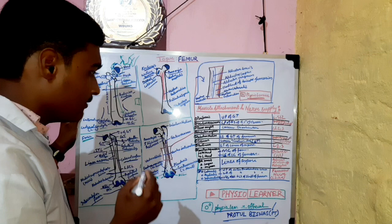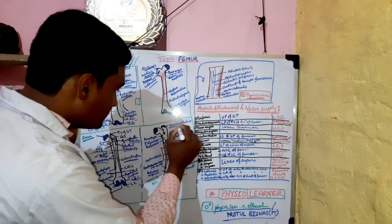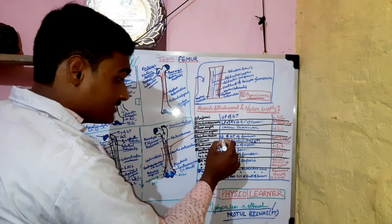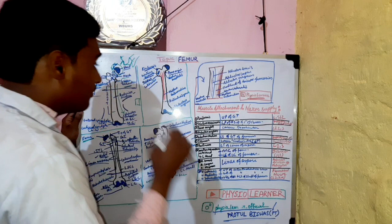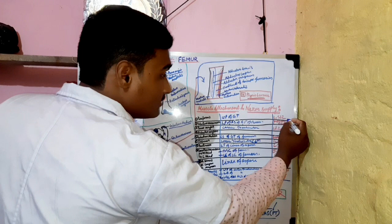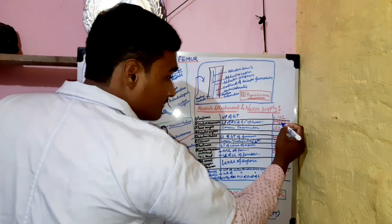Gluteus medius inserts into the lateral surface of the greater trochanter of the femur. The nerve supply of gluteus medius is the superior gluteal nerve — L4, L5, S1. The nerve supply of gluteus maximus is the inferior gluteal nerve.